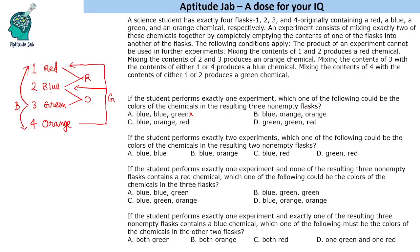Next option: blue, orange, orange. That means orange should remain intact and he should obtain another orange by mixing blue and green. If he mixes blue and green, he gets orange, but the remaining flasks would be orange, orange, red - not orange, orange, blue. That is again incorrect. Next: blue, orange, red. That means green has to be removed by mixing. If we mix green and red we get blue, blue, orange - not possible. If we mix green and blue we get orange, orange, red - not an option either.